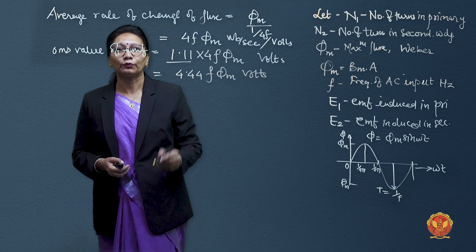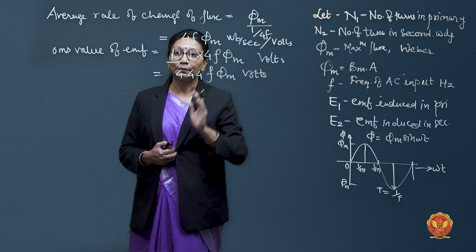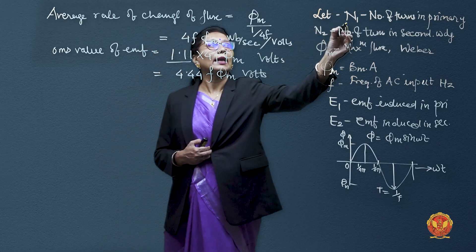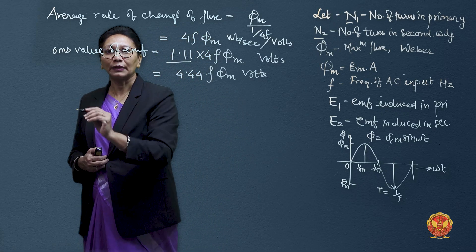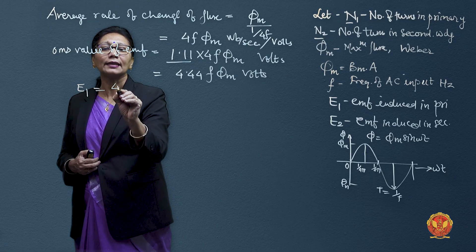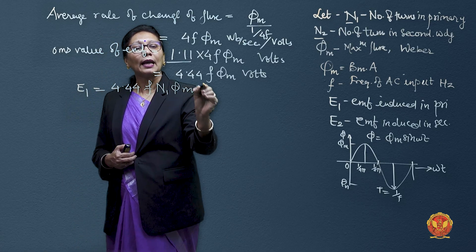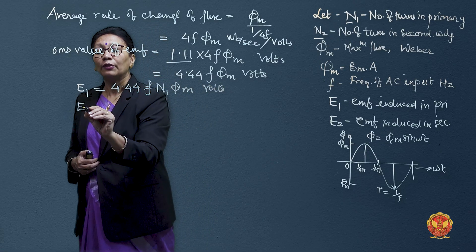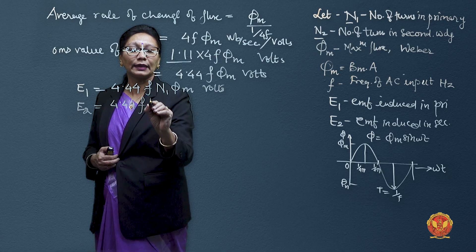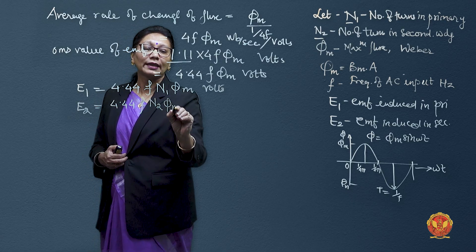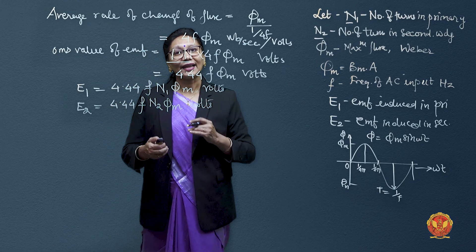Now we have to include one more factor. This change of flux is for a single winding case, but our primary and secondary windings have N1 and N2 turns respectively. So the EMF induced in primary winding E1 = 4.44 × f × N1 × phi m. Similarly, for secondary winding, E2 = 4.44 × f × N2 × phi m. This way we have derived the EMF equations for primary and secondary windings.